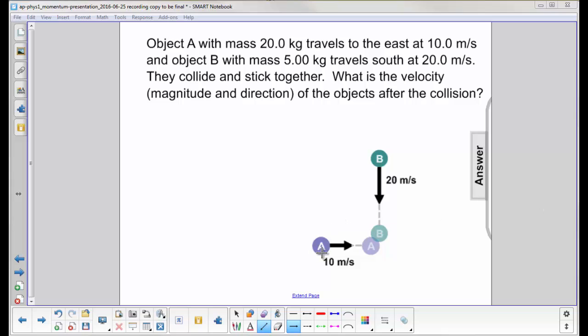Object A with a mass of 20 kilograms travels to the east at 10 meters per second. Object B with a mass of 5 kilograms goes 20 meters per second to the south. They collide right here and stick together. What is the velocity of the objects after the collision?